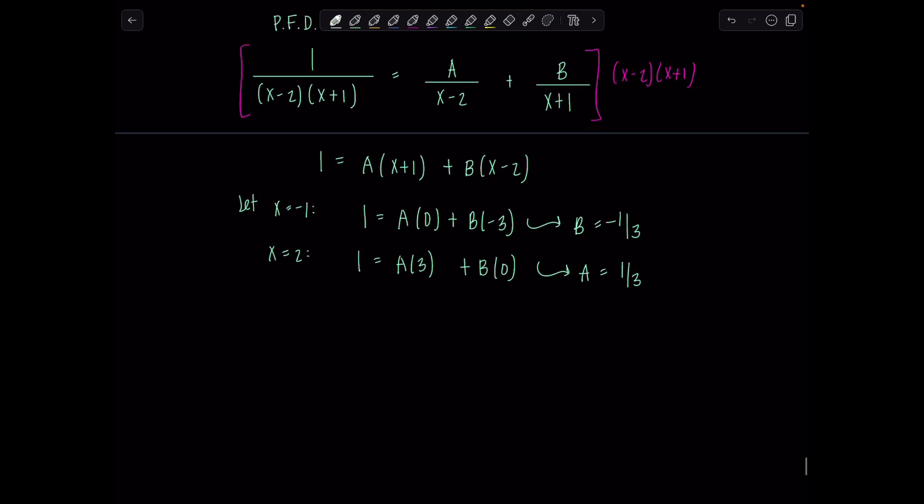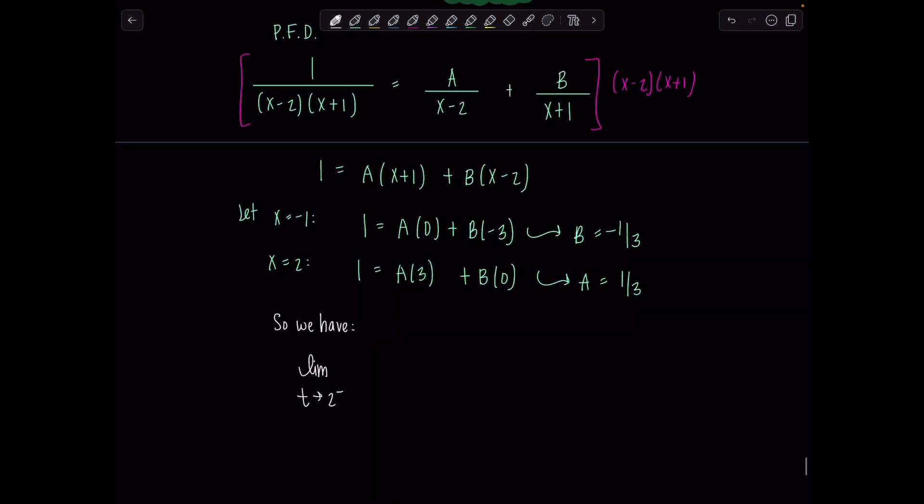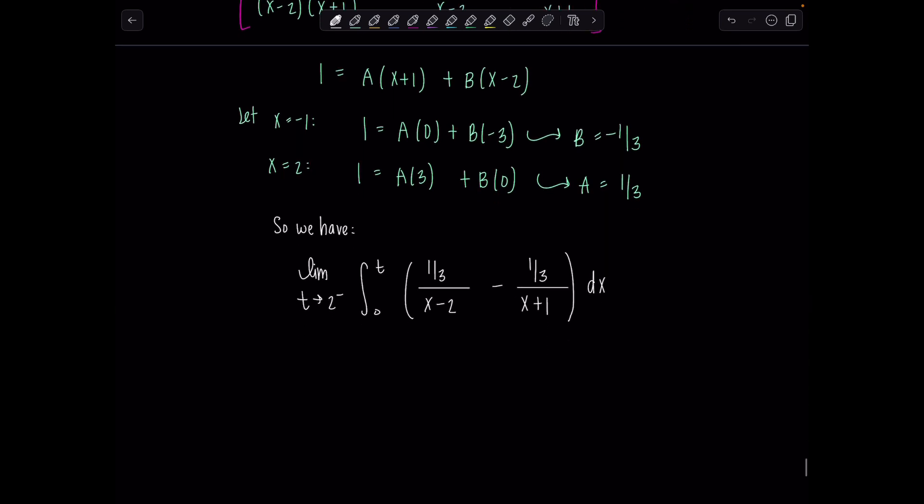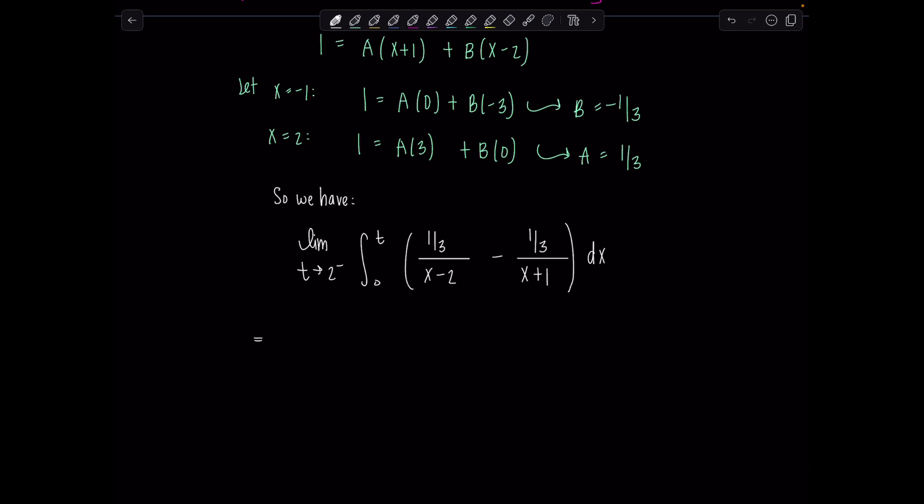So then putting this all together, let's go back to our integral. We have the limit. It was t approaches 2 from the left. 0 to t, and then we have 1 third over x minus 2. And then I'm going to write minus, since B was negative, 1 third over x plus 1 dx. How are we doing? You know, I really want to take that 1 third out. Will you allow me to do so?